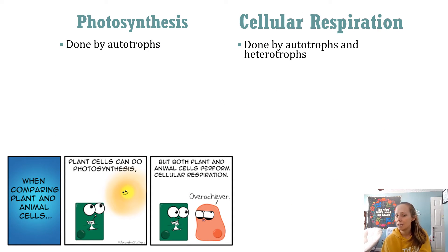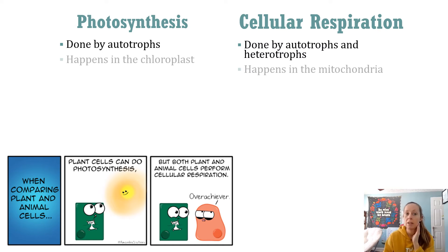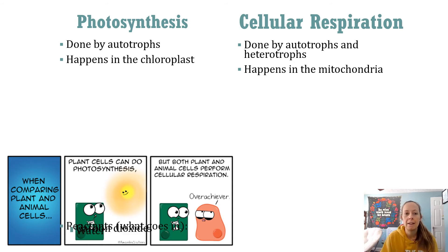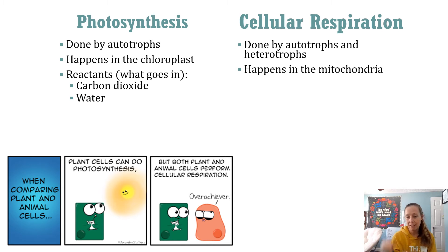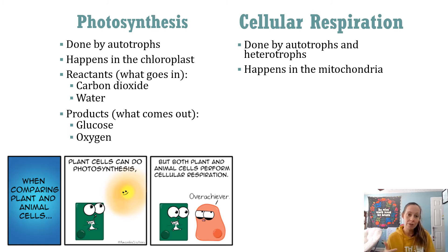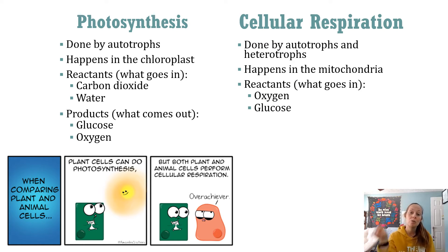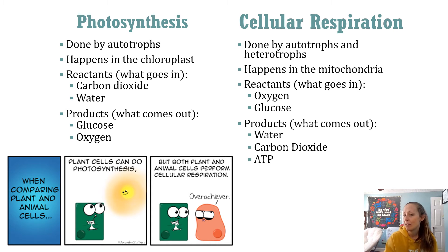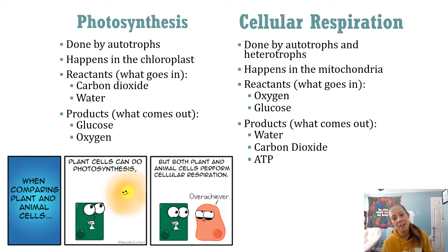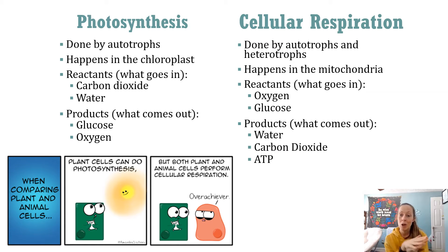Photosynthesis is done by autotrophs; cellular respiration is done by autotrophs and heterotrophs. Photosynthesis happens in the chloroplast; cellular respiration happens in the mitochondria. The reactants going into photosynthesis are carbon dioxide and water, and what comes out is glucose and oxygen. That glucose and oxygen then go into cellular respiration. What comes out of the mitochondria is water, carbon dioxide, and ATP. Plants do both photosynthesis and cellular respiration, while animals only do cellular respiration.